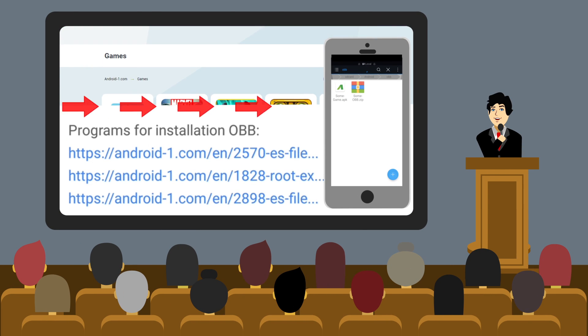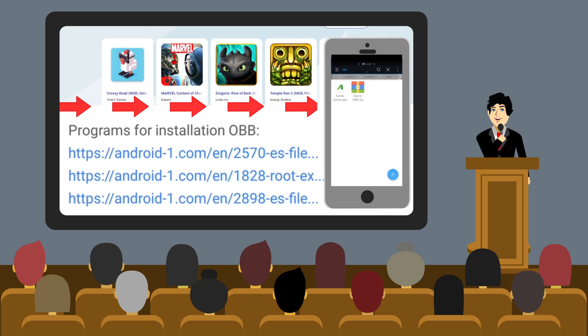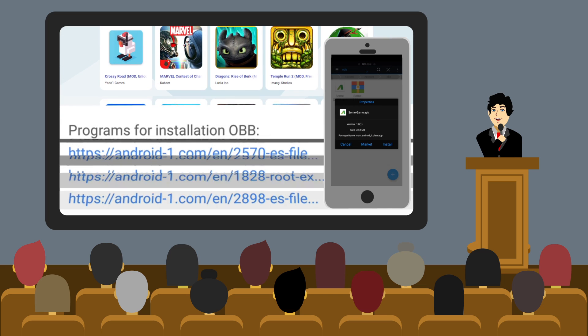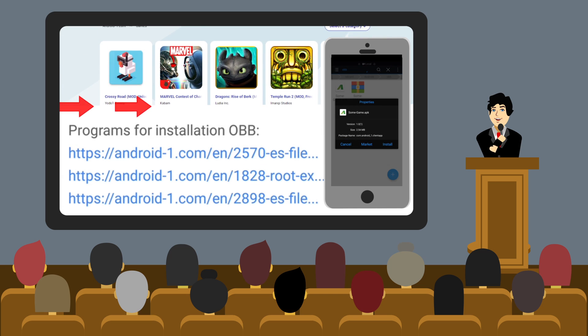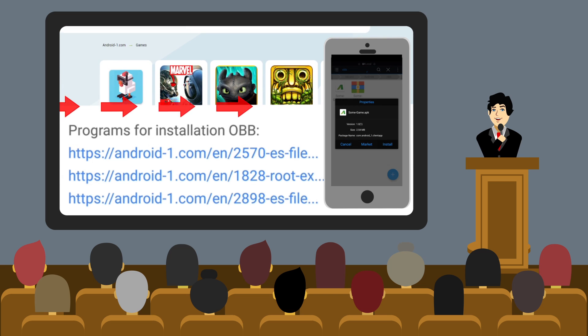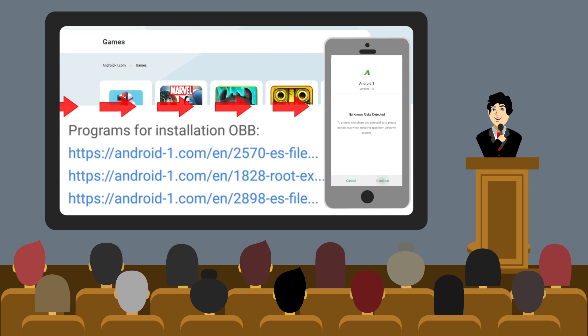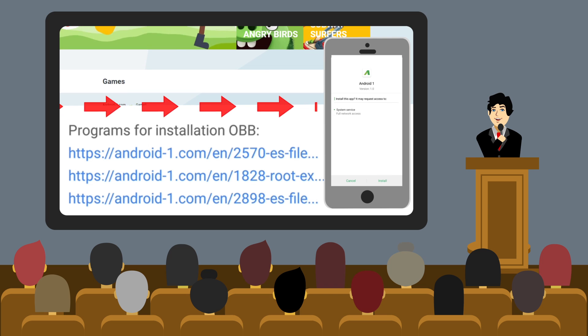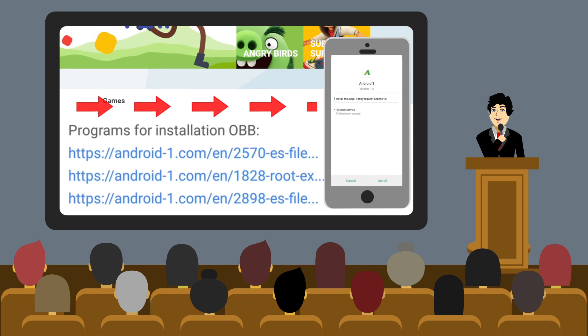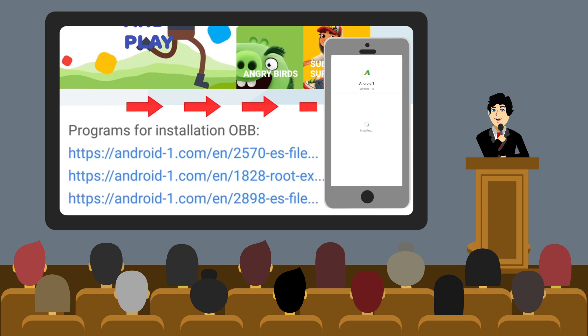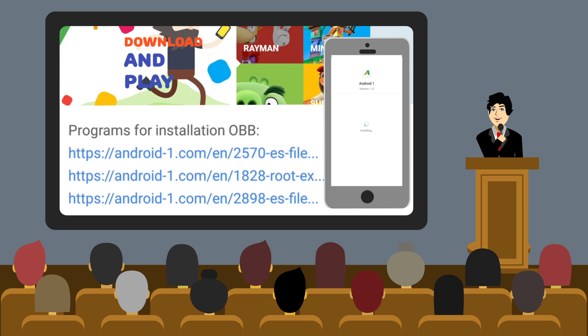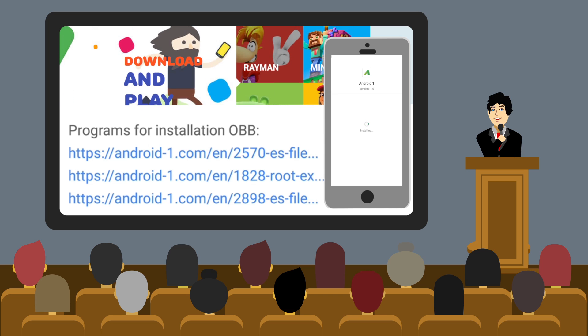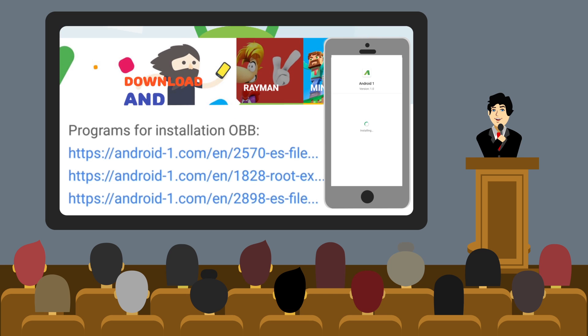After downloading the files, go to the file manager. In the description of the video, there are also programs. Select the downloaded APK and click on it. Agree to the terms and complete the installation.